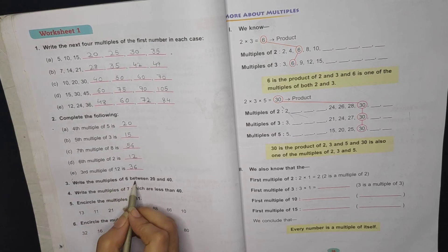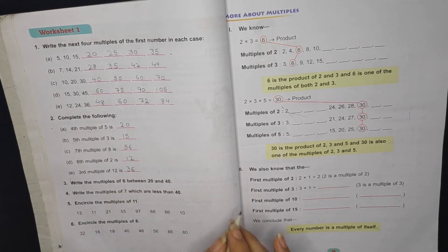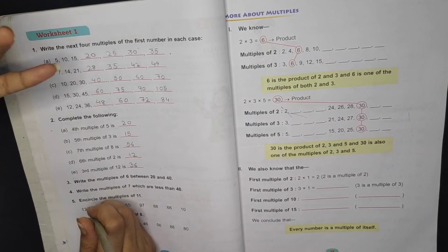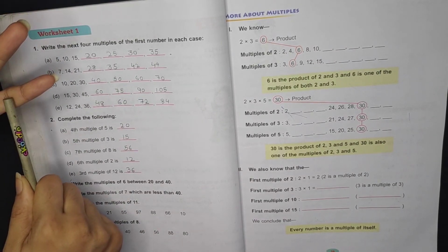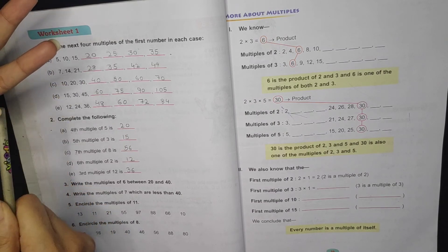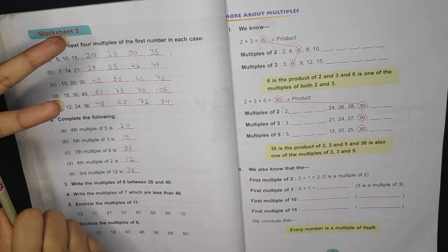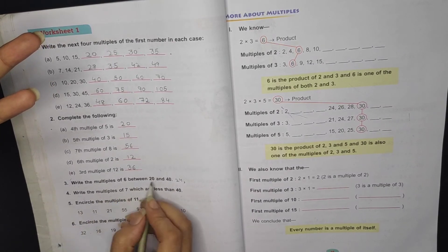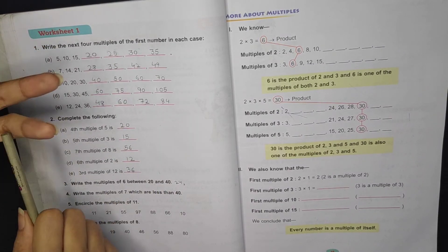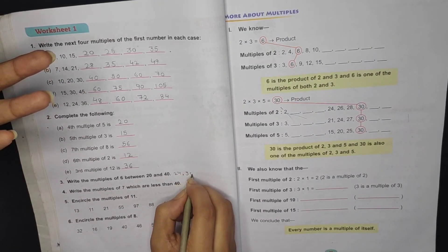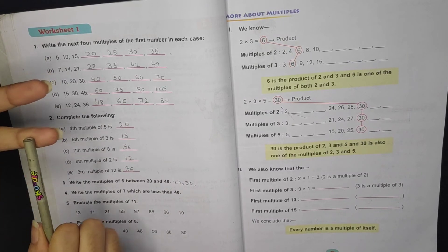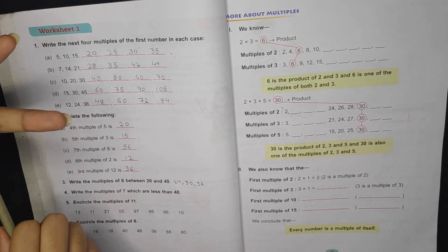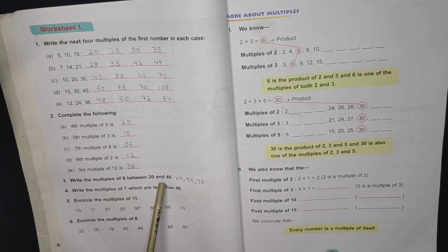Now 7th multiple of 6. So 6 times 7 is 42.